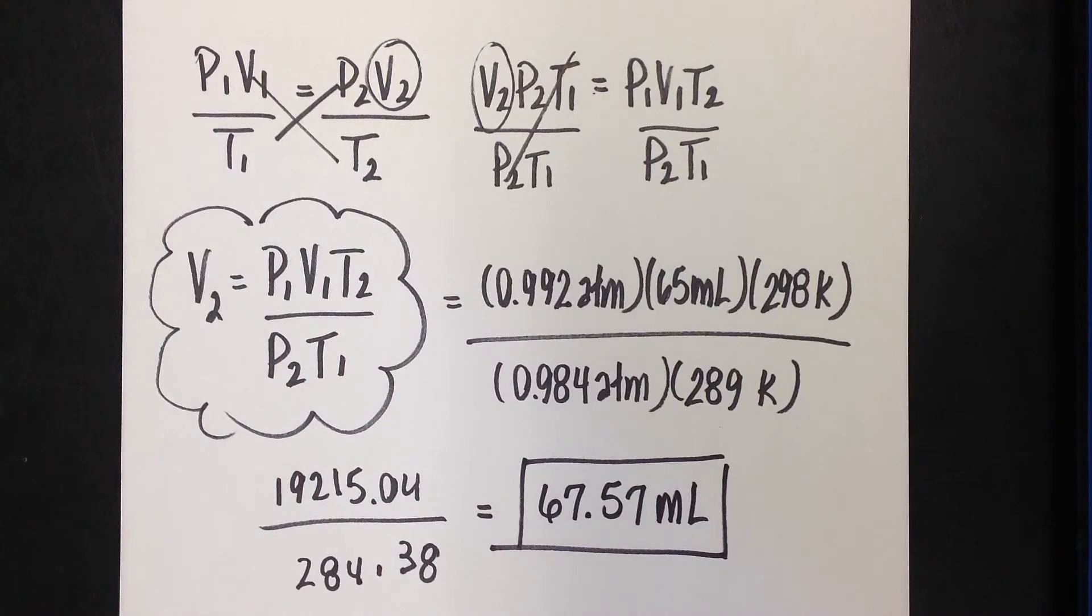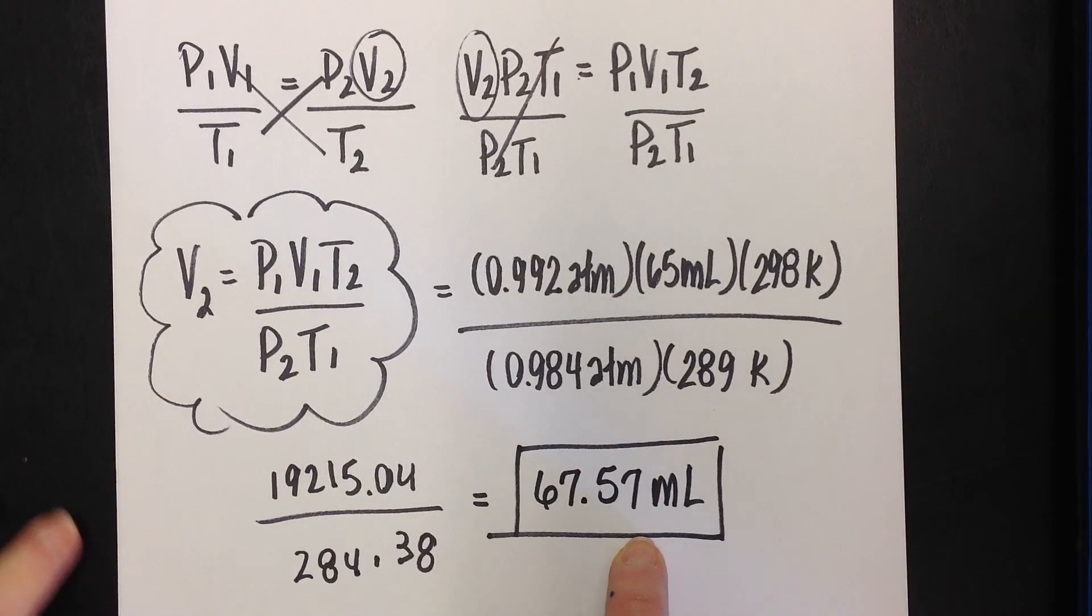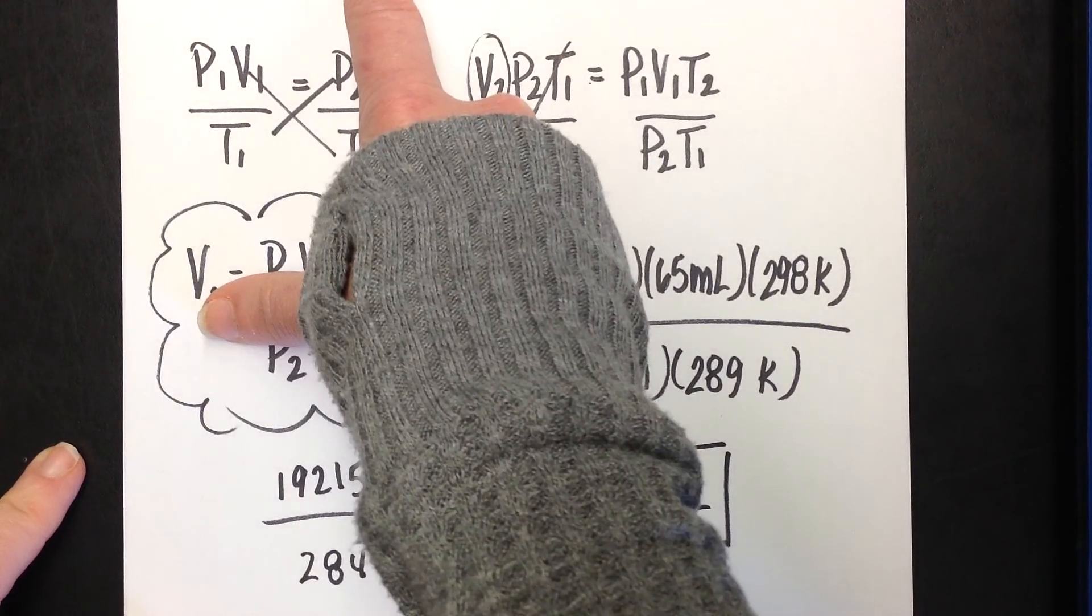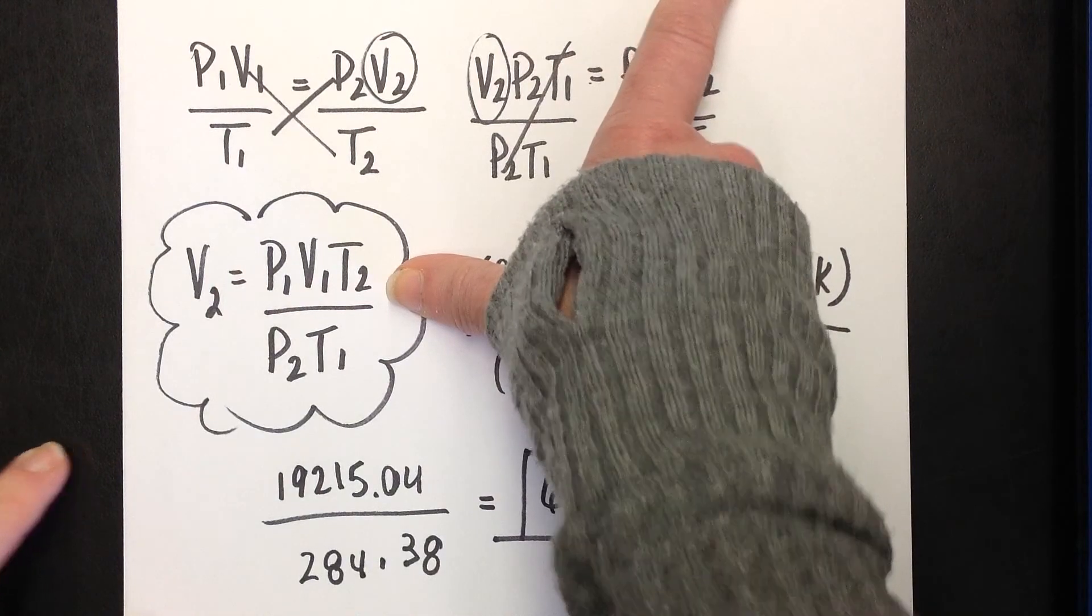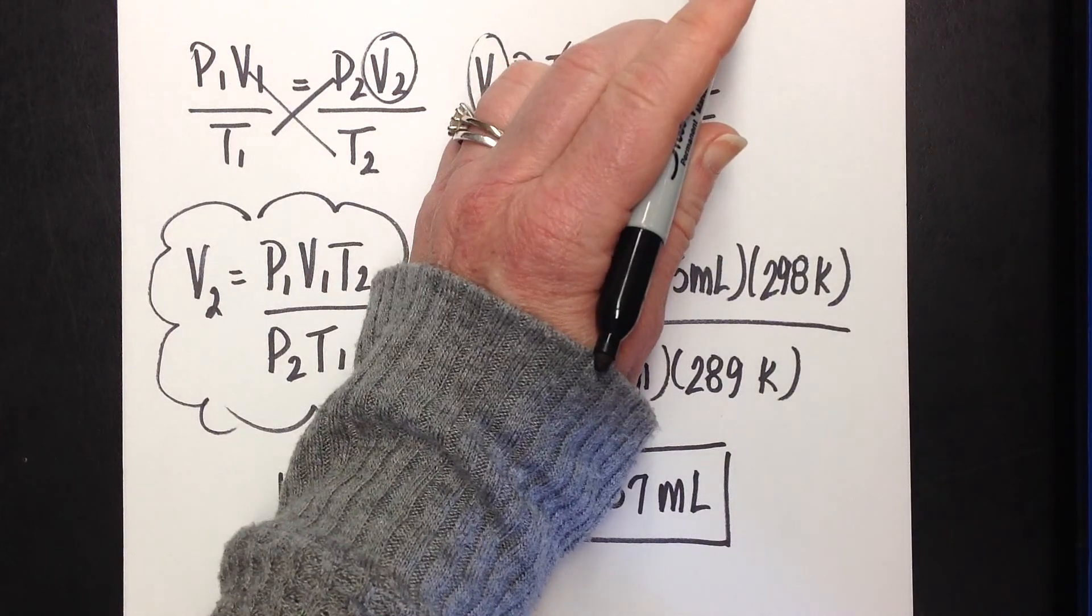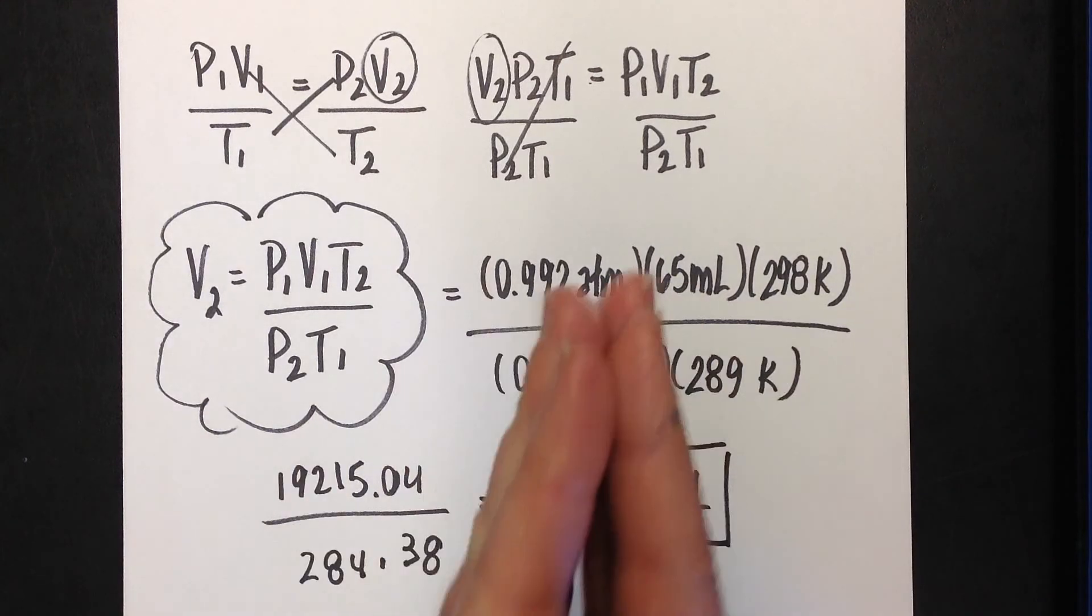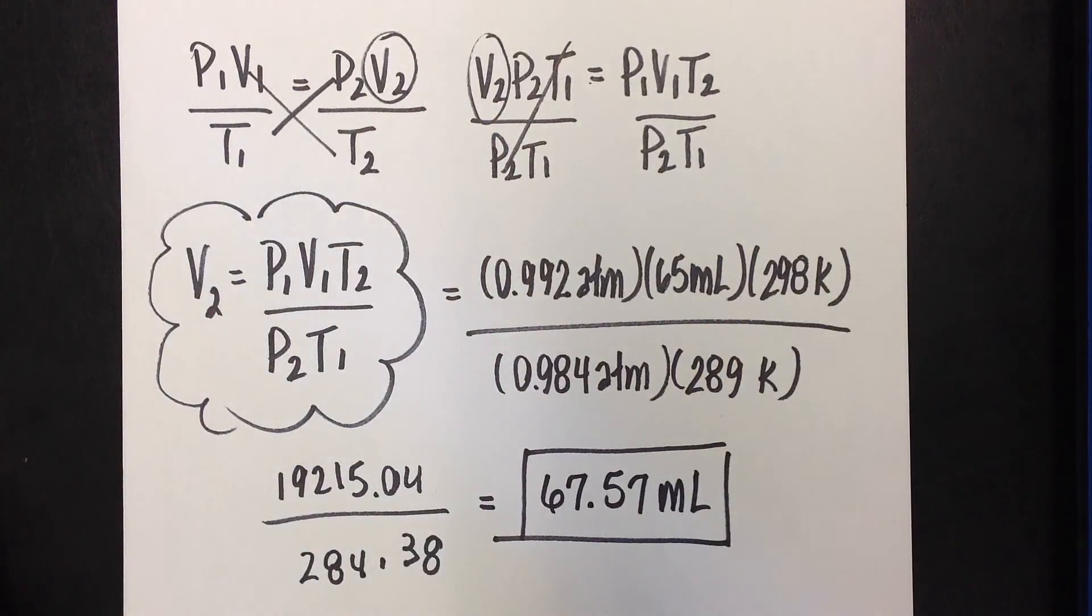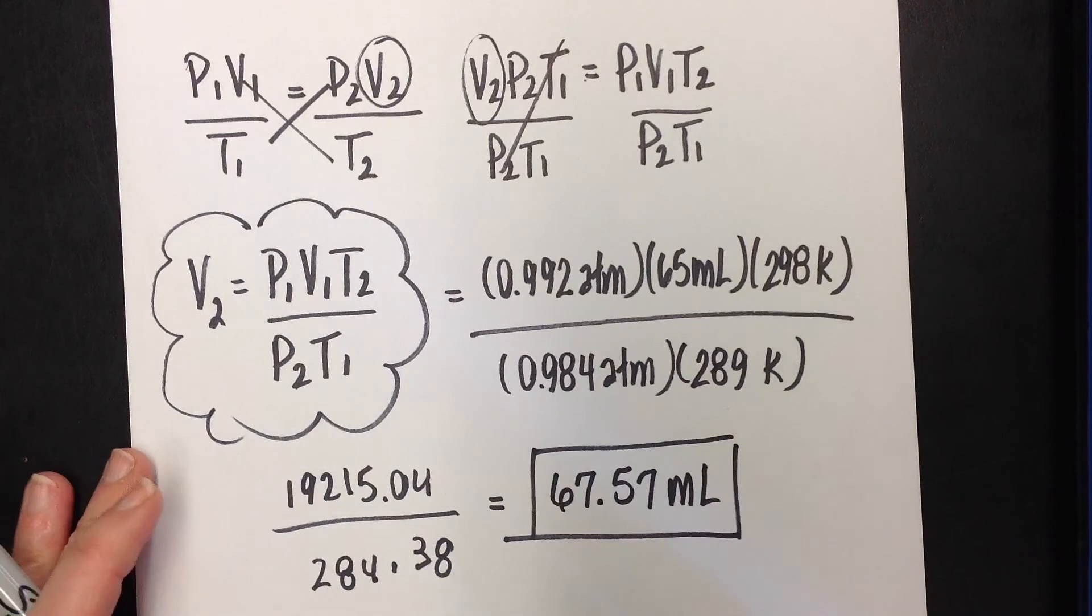So I went from 65 milliliters to 67.57. My volume went up just a little. Let's see if we can see if that makes sense. My pressure went from 0.992 to 0.984, so my pressure went down a little bit. That would definitely make the volume increase. And my temperature did go up slightly from 16 to 25. So with the pressure releasing, that's going to increase your volume. The temperature going up a little is going to increase your volume. I didn't have a huge change. It went from 65 to 67, but that actually makes sense.